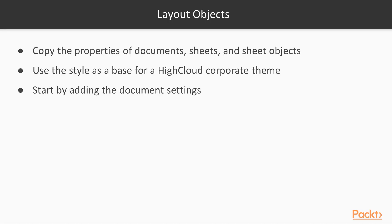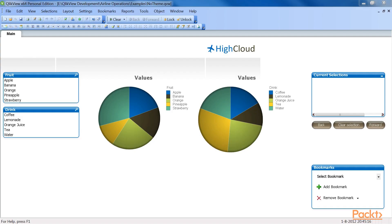Now that we've seen how to apply themes, let's see how we can create them. A theme is always created by copying the properties of documents, sheets, and sheet objects which were already created. As we already spent quite some time styling our document, we can use it as a base for a highcloud corporate theme. We will start by adding the document settings.